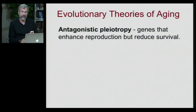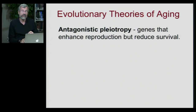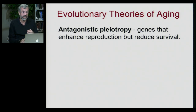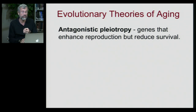Fundamental to this concept is the idea of antagonistic pleiotropy. There may be certain genes that are favored by natural selection because they enhance reproduction, but those same genes have an additional effect — a pleiotropic effect — side effects that reduce our survival.